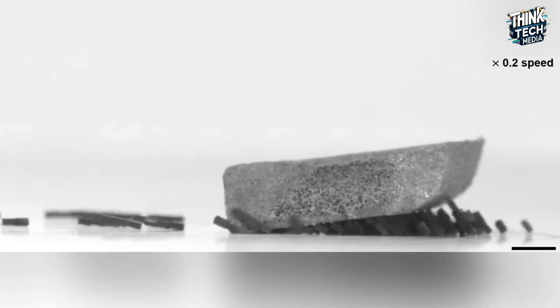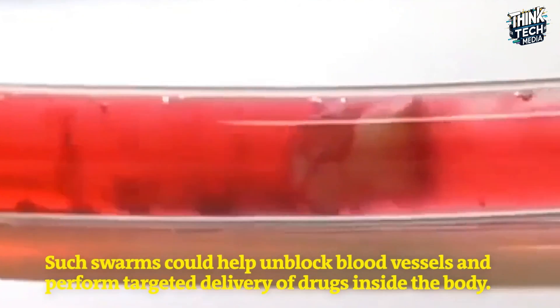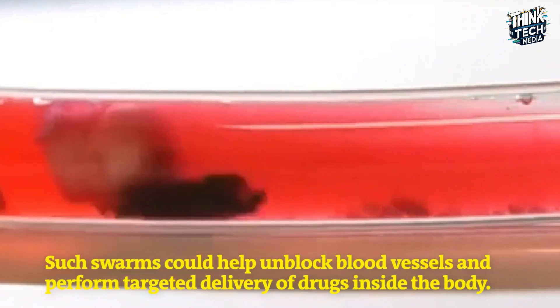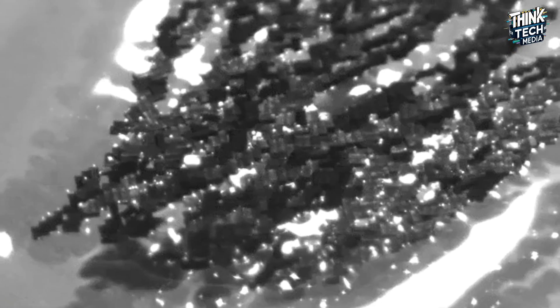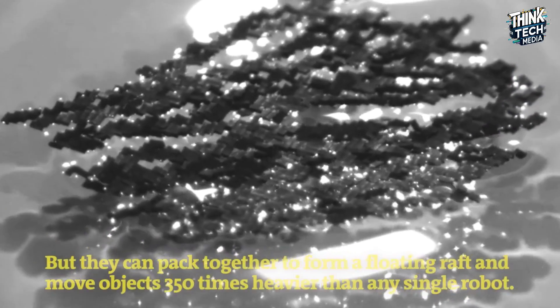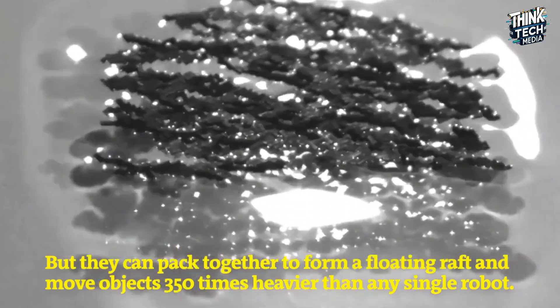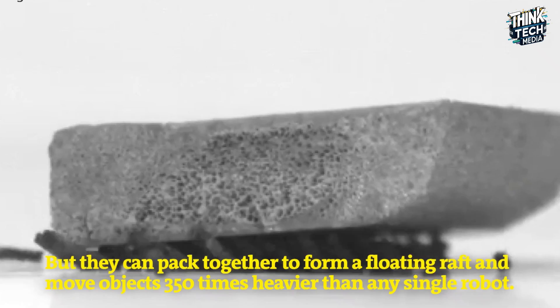The researchers also simulated clearing blocked tubes, mimicking the functionality required to address clogged blood vessels. Using spinning and orbital dragging motions, the micro robots could manipulate small organisms, demonstrating immense potential in medical treatments, drug delivery, and cargo transport.